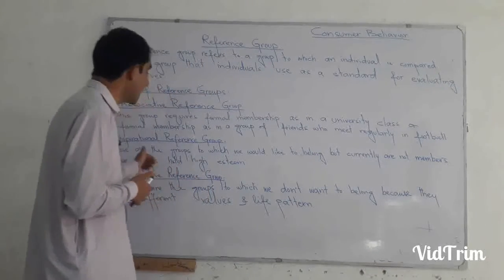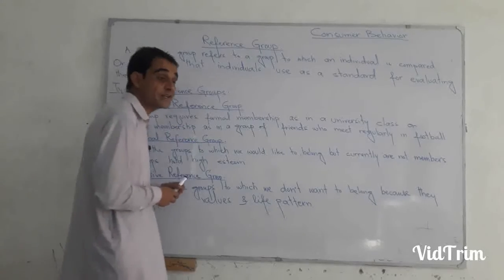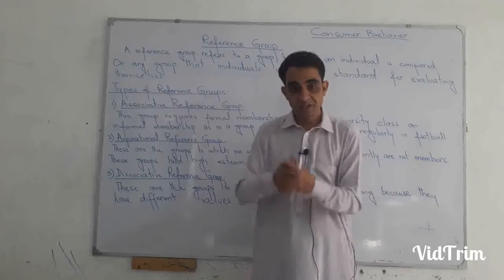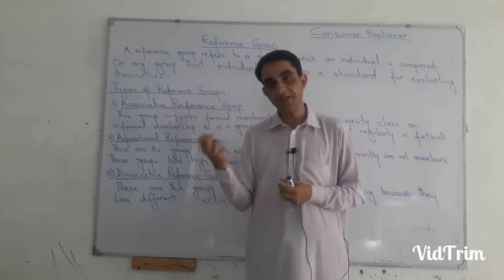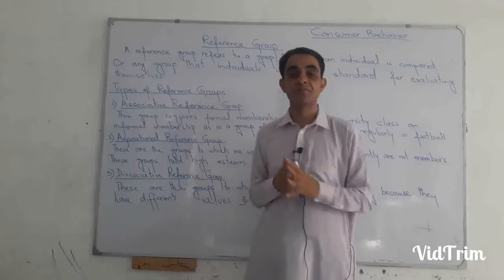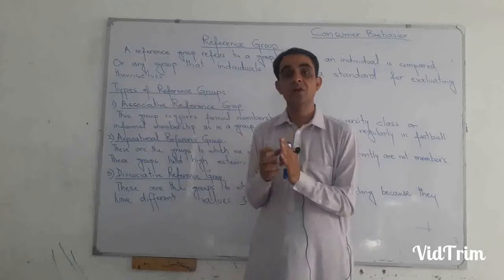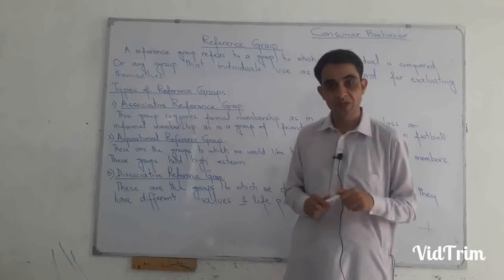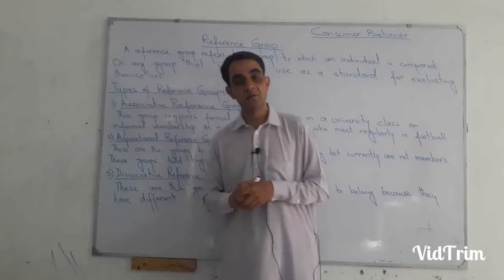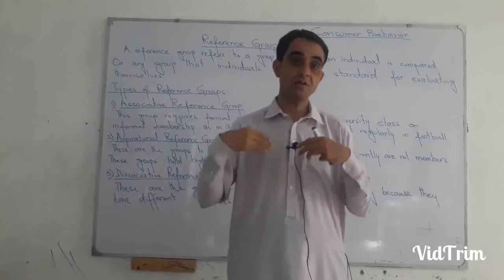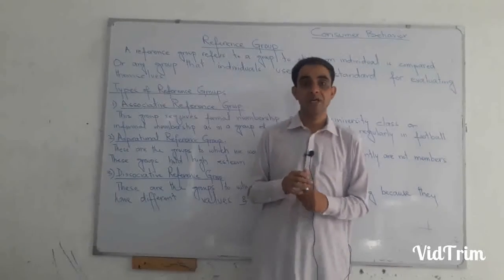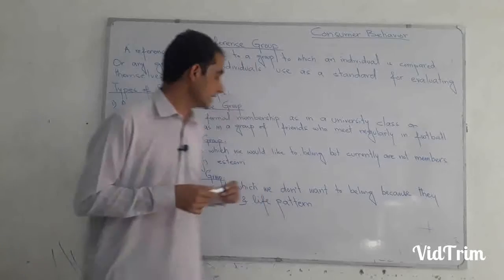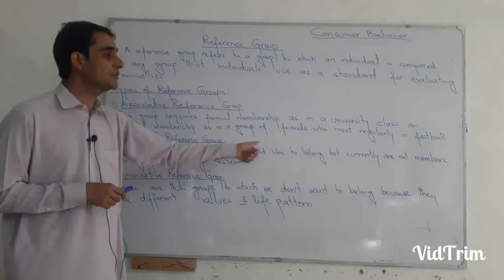The second type is the aspirational reference group. An aspirational reference group is that group which inspires you, motivates you, encourages you, and attracts you. You want to become a member of that group — you want to become a person like the members of that group — but currently you are not a member. For example, some students want to become a player of the national football team, but they are not players of the national football team right now, so the national football team is an aspirational reference group for them.